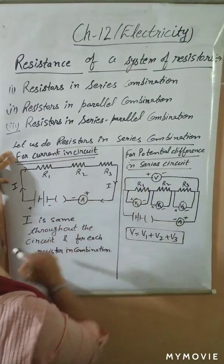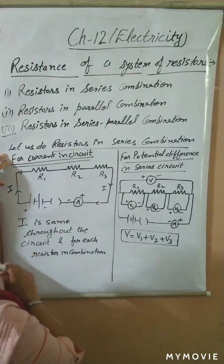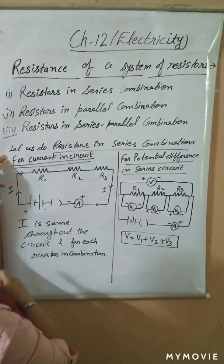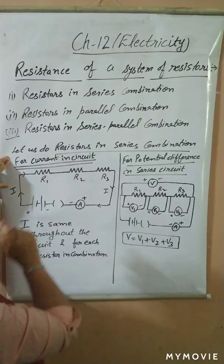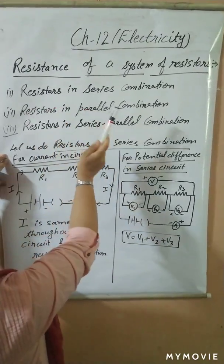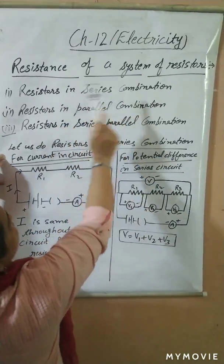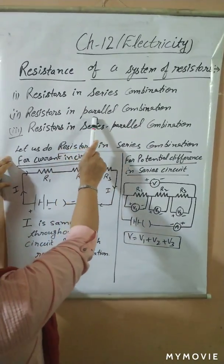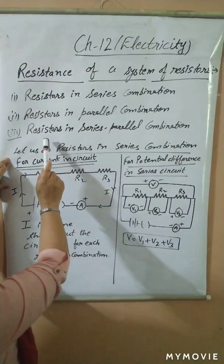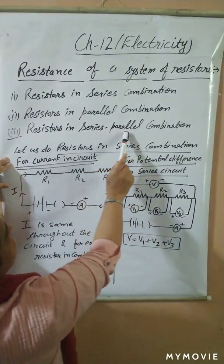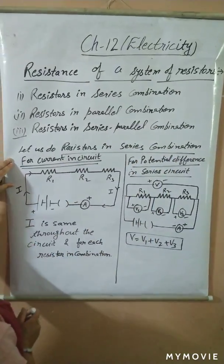Instead of this, if we are having a number of resistors — in daily life, with one resistor it is not possible. We are having at our home different resistors like bulb, press, geyser. So they are all combined in different circuits. Resistors can be combined in different ways: the first way is resistors in series combination, second is resistors in parallel combination, and third is resistors in series and parallel combination. We will do all these combinations one by one.